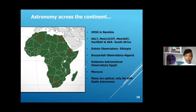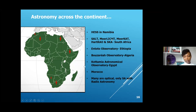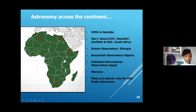Looking at astronomy activities across the African continent: we have HESS in Namibia, the Entoto Observatory in Ethiopia, the Kottamia Astronomical Observatory in Egypt, Algeria, and Morocco, and SALT and Hartebeesthoek in South Africa. In my case I'm dealing with radio astronomy, but to highlight that the observatories in Ethiopia, Egypt, Algeria, and Morocco are all optical astronomy. We only have radio astronomy in South Africa.